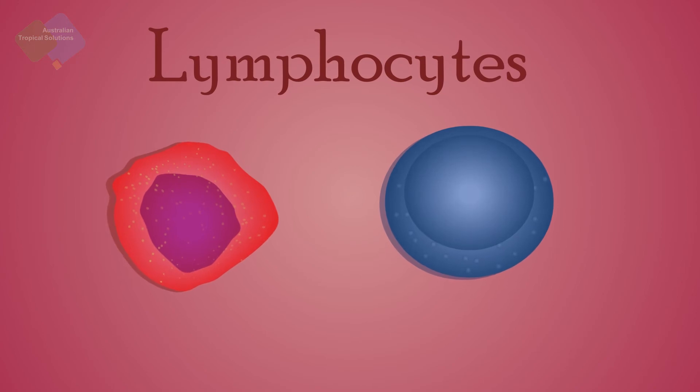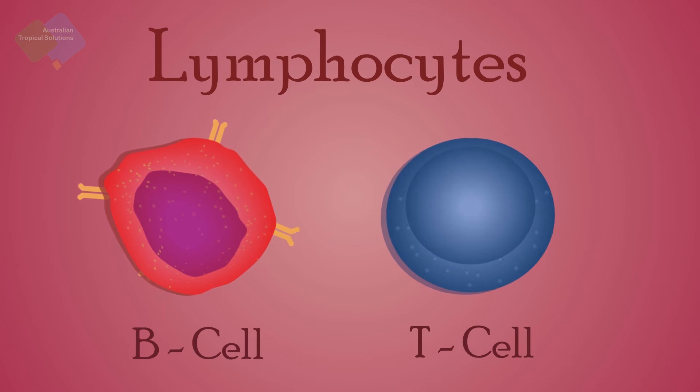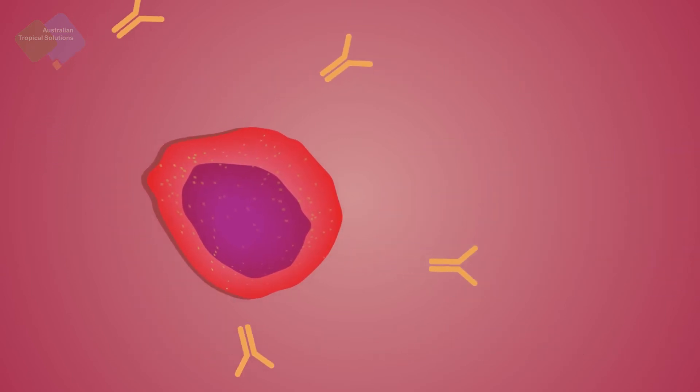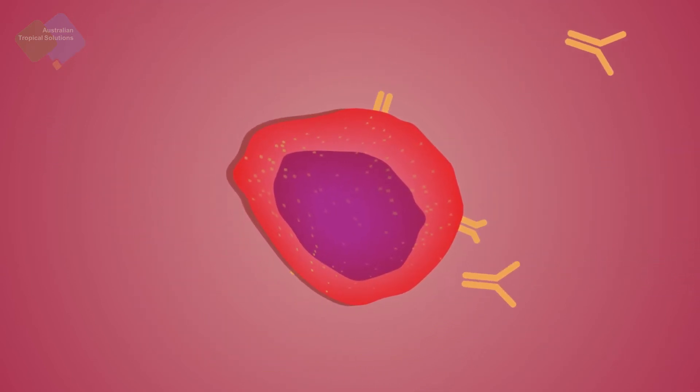These specialized cells are known as lymphocytes. There are two major types of lymphocytes, the B cells and the T cells. The B cells are cells that produce antibodies.